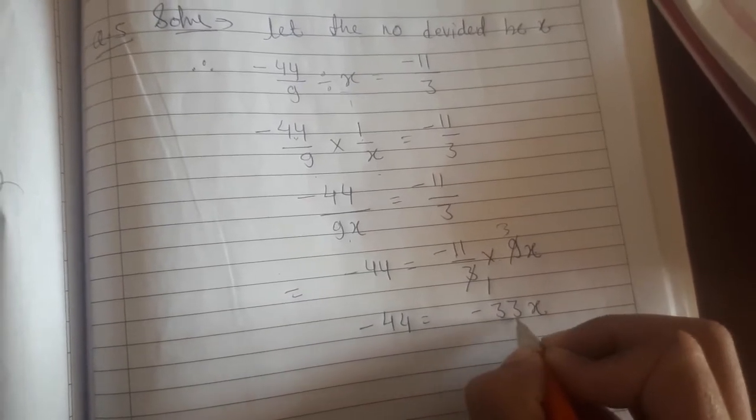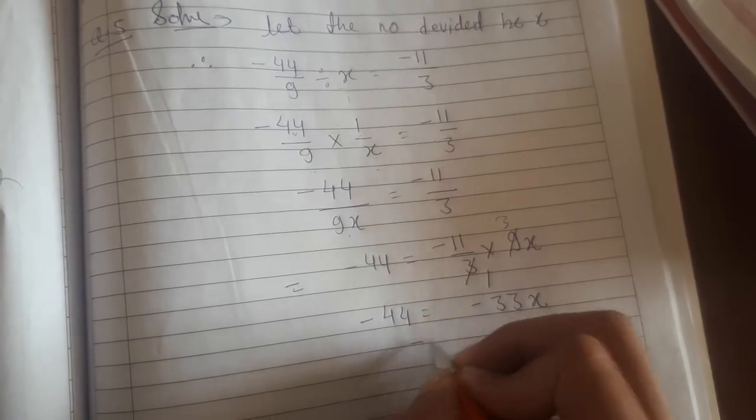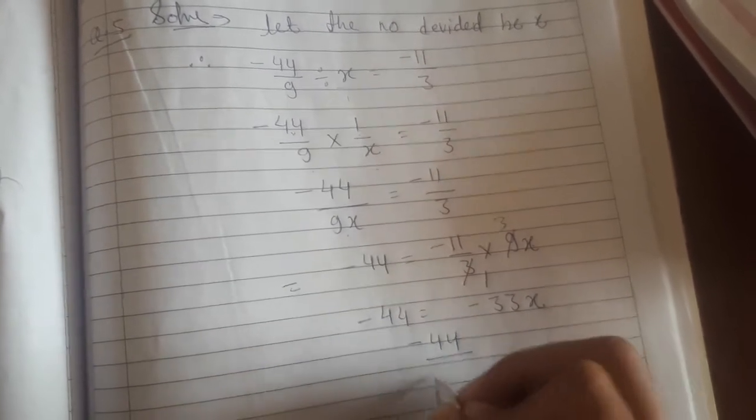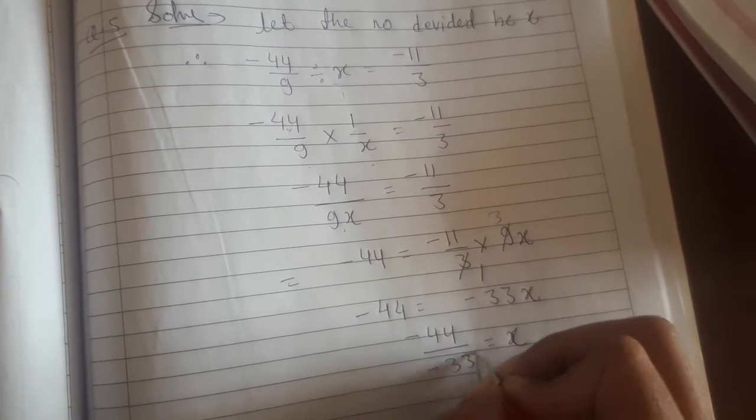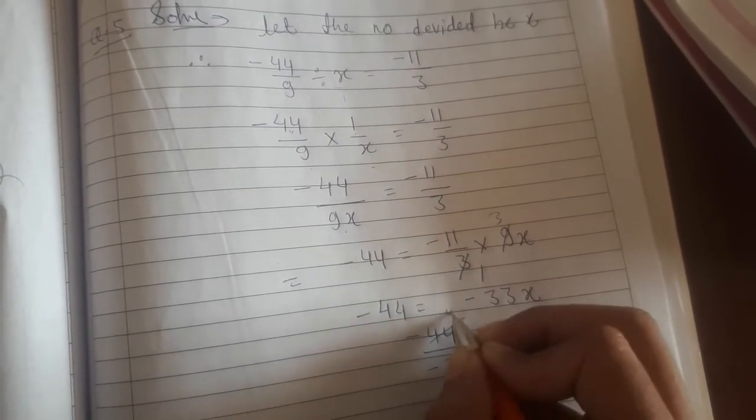We won't keep x in multiply, we'll transfer it to divide. So -44 divided by -33 equals x. 11 times 3 is 33, 11 times 4 is 44.